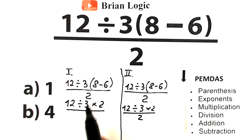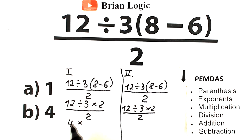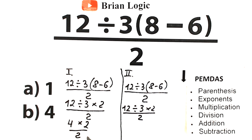Going left to right: we have 12 divided by 3, which gives us 4. Then 4 times 2 gives us 8. Then 8 divided by 2 gives us 4. So division first, then multiplication, then division — and the answer is 4. This is option B.